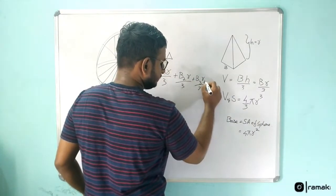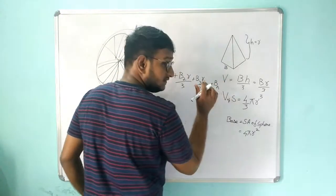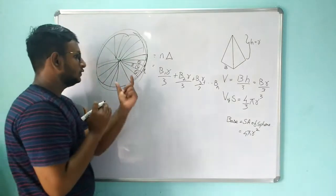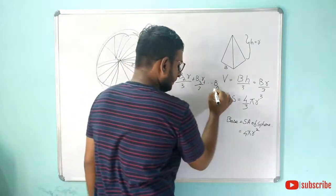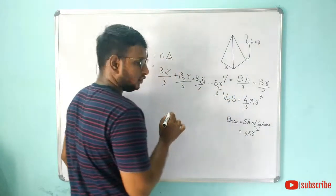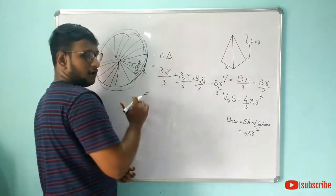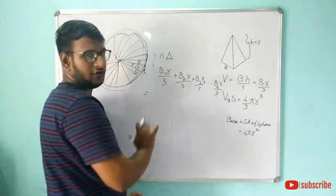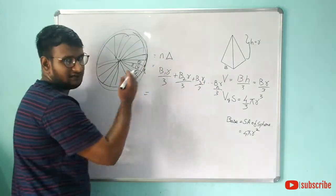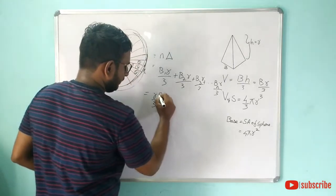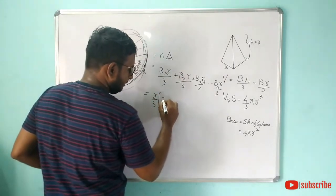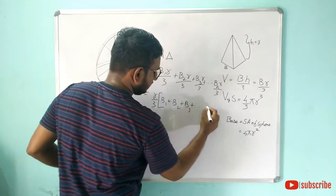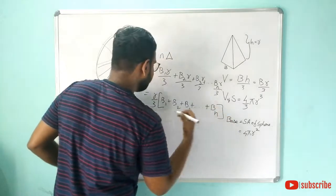This goes on till bn, the nth pyramid. We have n number of pyramids, so bn r by 3. We can take r by 3 common, so it's r by 3 times b1 plus b2 plus b3 goes on till bn.